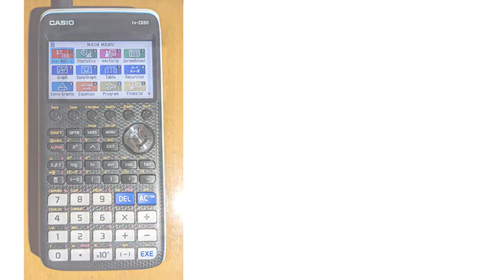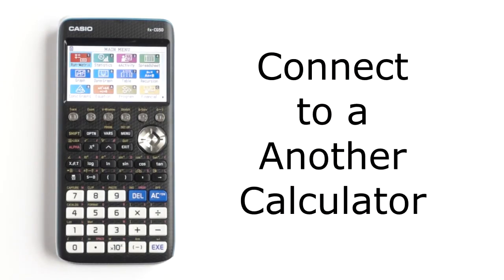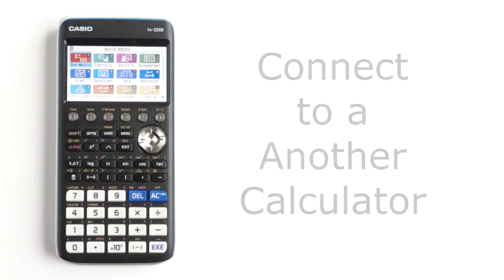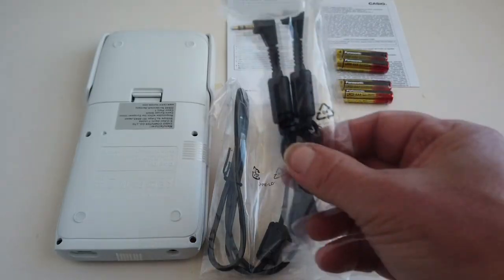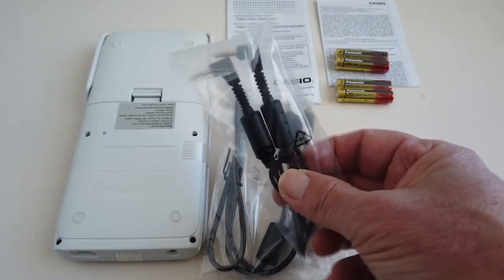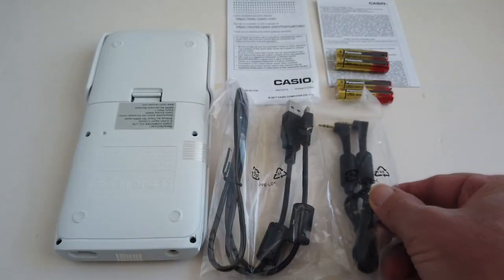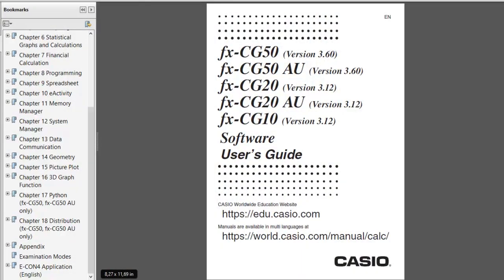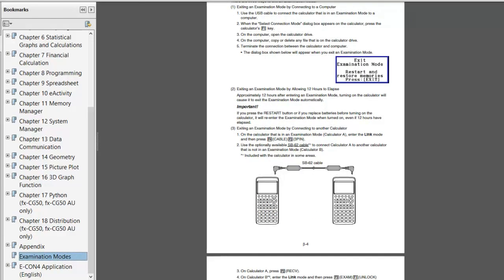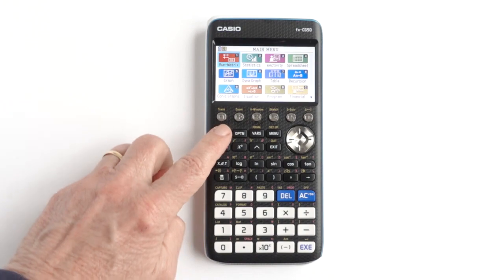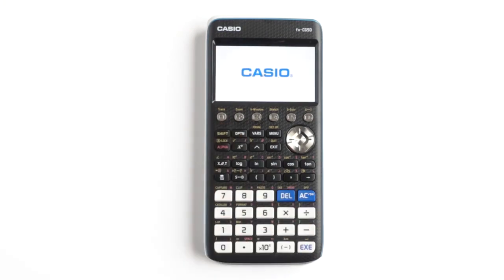The third way to exit exam mode is to connect your calculator with another calculator that is not in exam mode, using the included cable for connecting calculators. It is a little complicated and I do not have a second calculator to show the steps, but you can download the software user's guide from Casio if you want to exit exam mode this way. That is it. If you like this video, please give it a thumbs up.